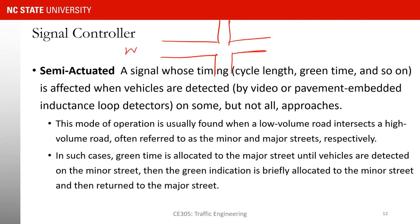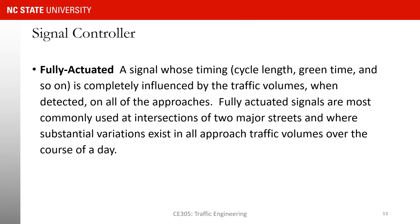Here I'm showing a major street with a minor street. We provide green time always to the major street unless there is a detection on one of the detectors on the minor street. If there is detection, the signal switches and provides green to the minor street. When no more vehicles are detected, the green goes back to the major street. In fully actuated control, vehicle detectors are on all movements and the controller allocates green based on detection on each detector.